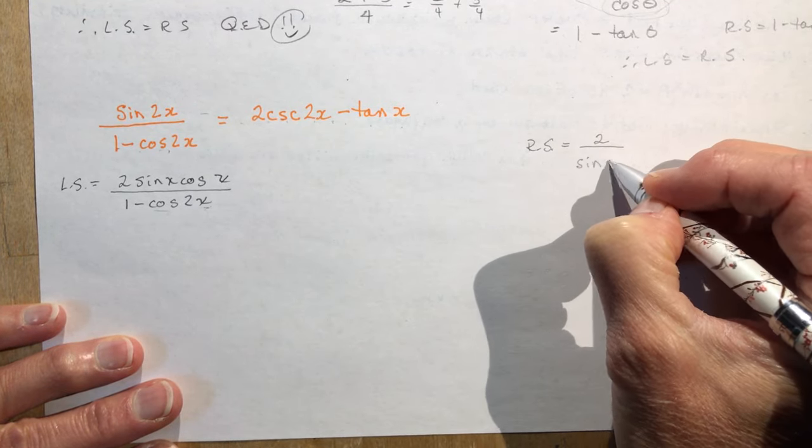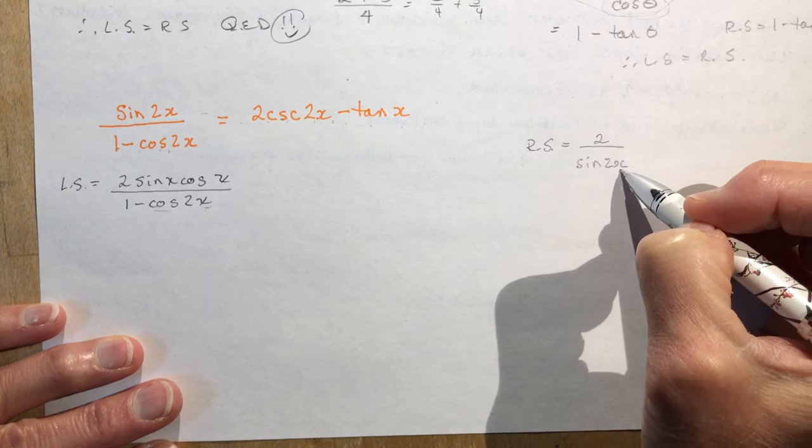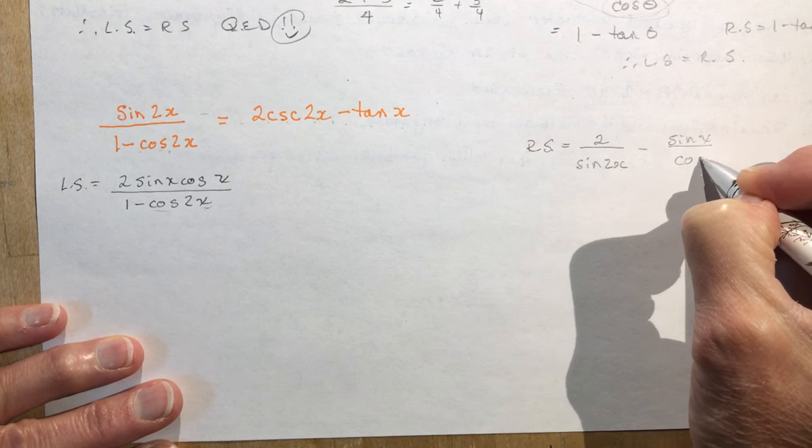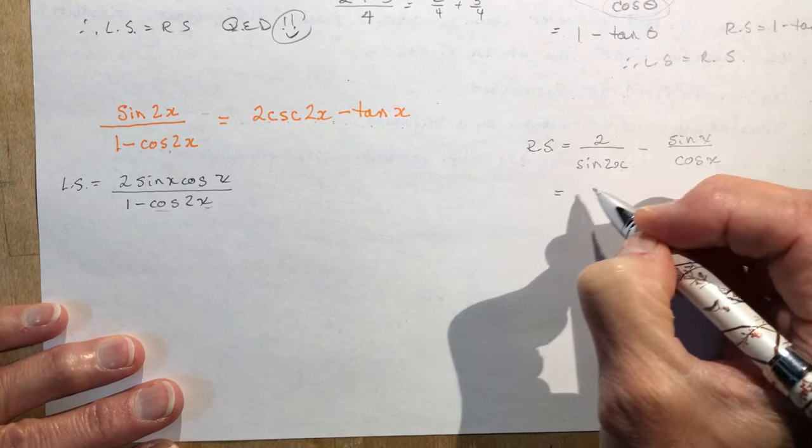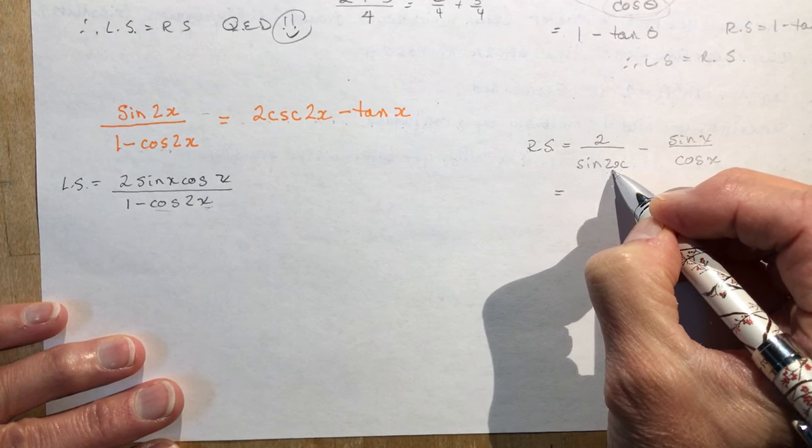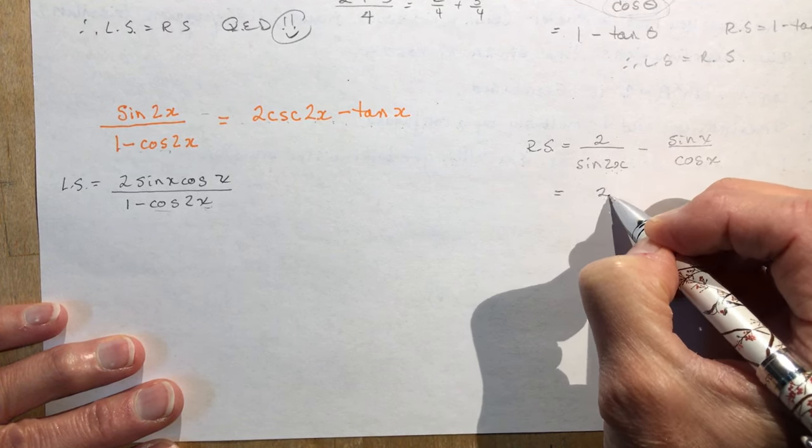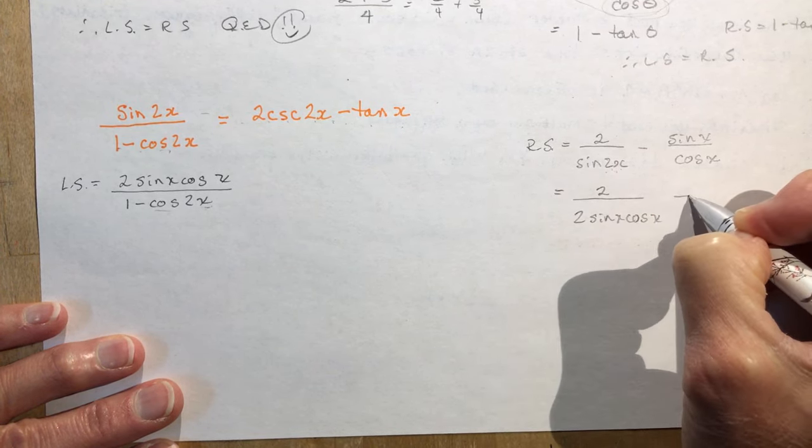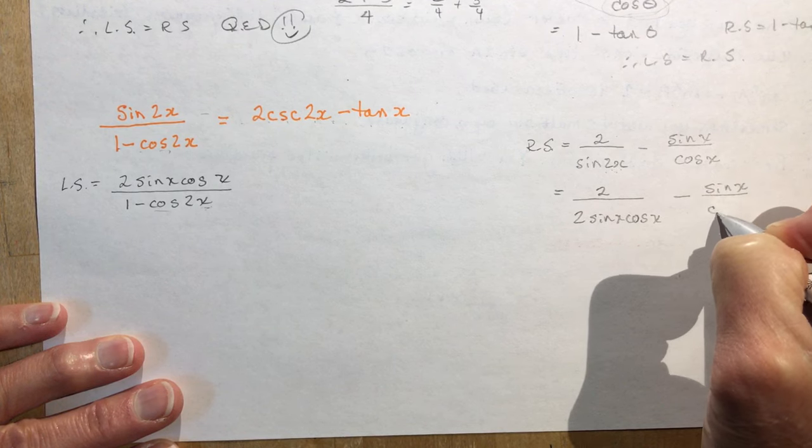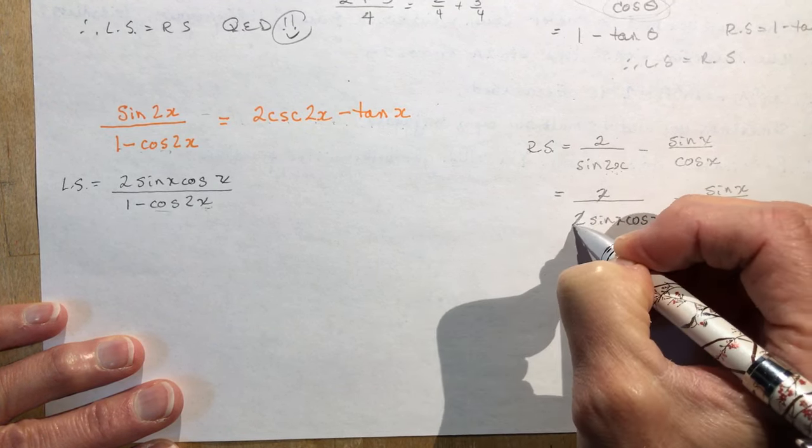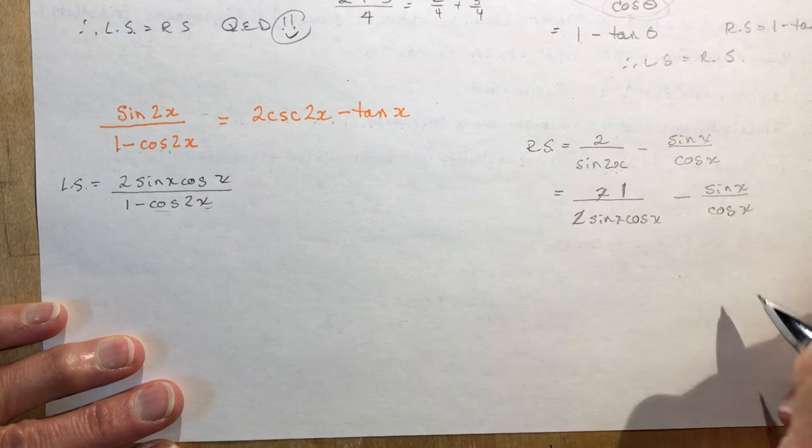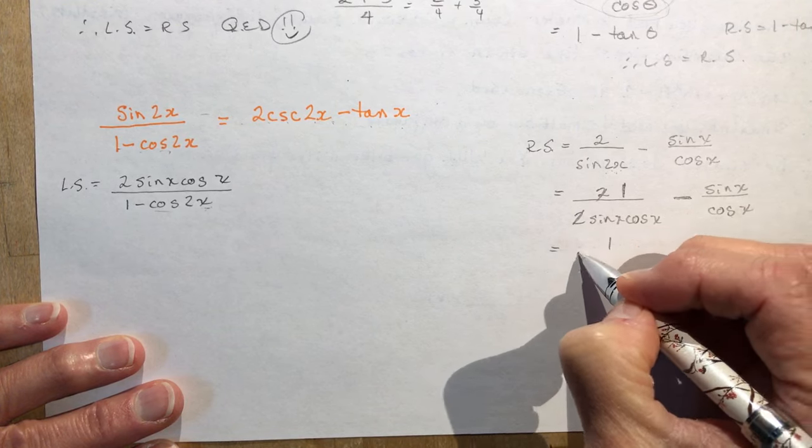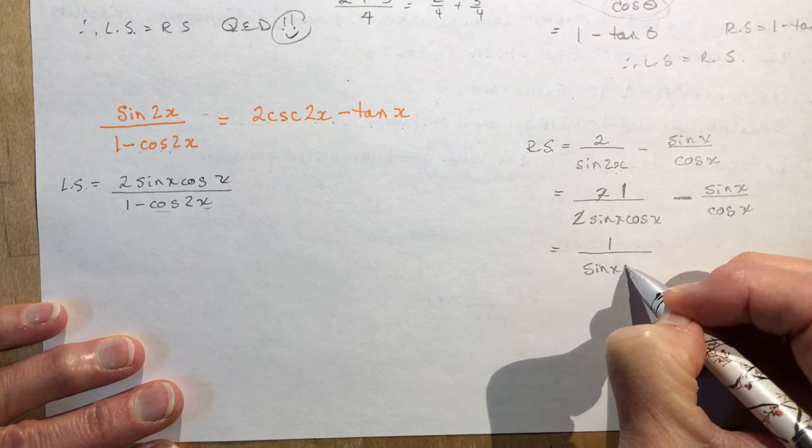So I'm going to go to the right side first. I'm going to put it right over way over here. So 2 cosec 2x, that's 2 over, cosec 2x is 1 over the sine of 2x, so I have 2 over sin 2x. And the tan x is going to be sin x over cos x.